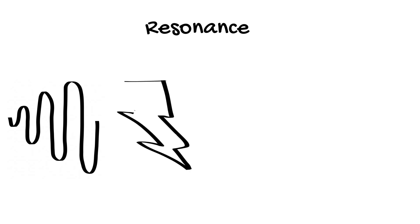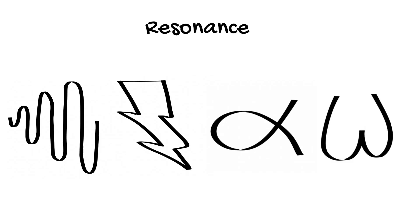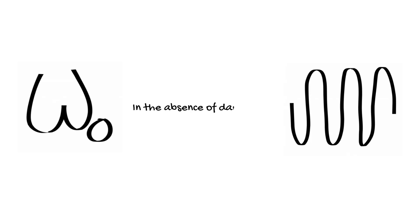We'll start with resonance. Resonance describes an increase in the oscillations of a vibrating system when energy is applied to the system in harmonic proportion to the natural frequency. The natural frequency of the system is the frequency at which the system will oscillate in the absence of damping.